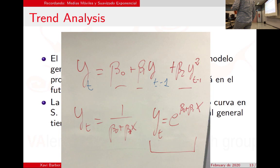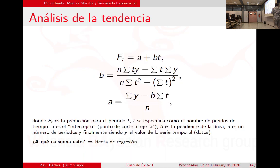Los modelos lineales tienen muchas ventajas: la primera es que somos capaces de visualizarlos. Incluso con 3 variables podemos hacer un eje 3D y pintar curvas y superficies. Hemos visto el suavizado exponencial y el método de Holt, pero la regresión también nos podría valer para ajustar un modelo, como veremos más adelante.